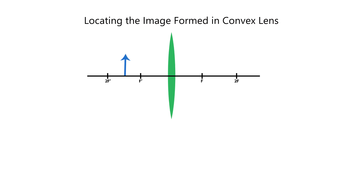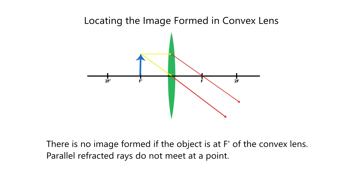Then we move the object exactly at the focus of the lens. There is no image formed because the refracted rays do not meet since they are parallel to each other.